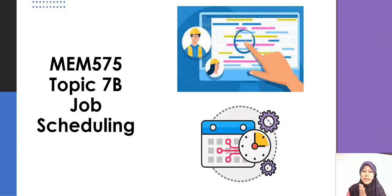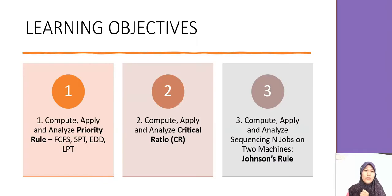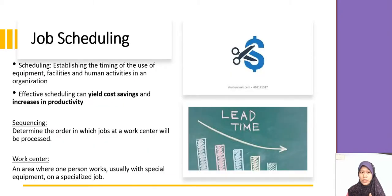Hi, Assalamualaikum. Today we're going to do topic 7B. We're done with topic 7A, in which we did the aggregate planning, MPS, and also MRP. So now we're going into job scheduling. We will learn three calculations that you need to know: the first one is on the priority rules, and then on the critical ratio, and also on the Johnson rules.